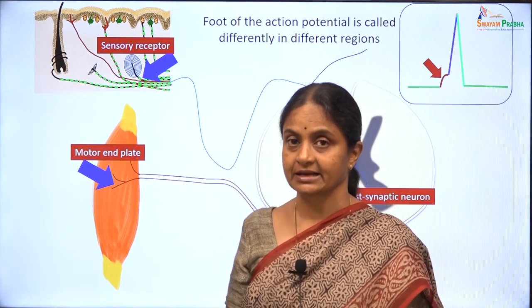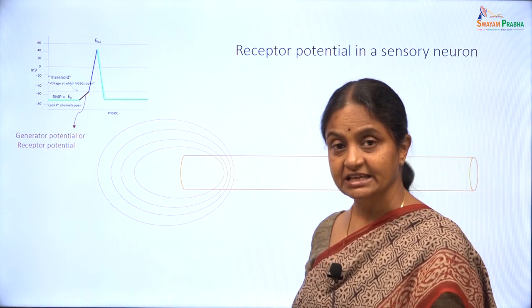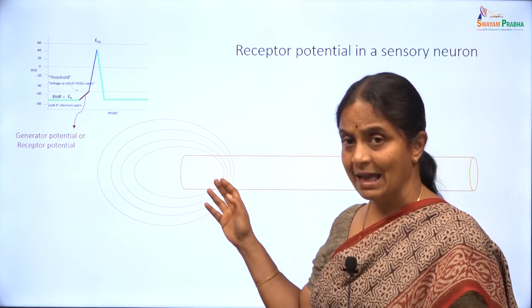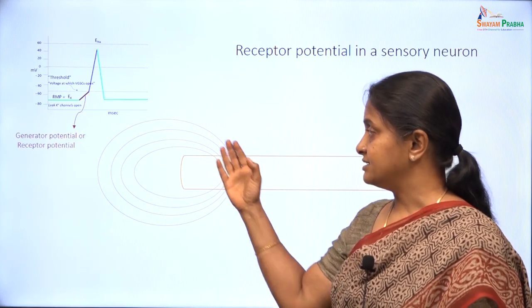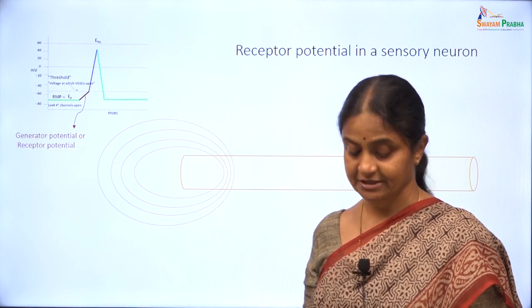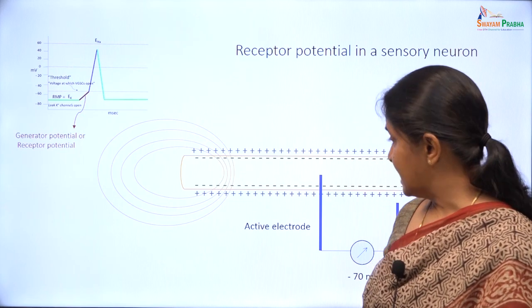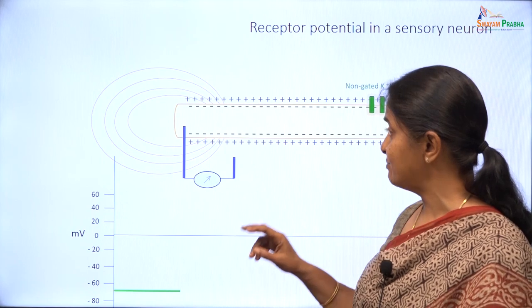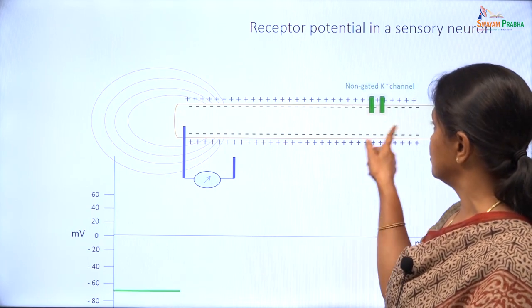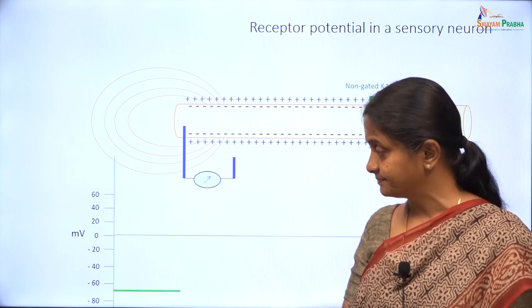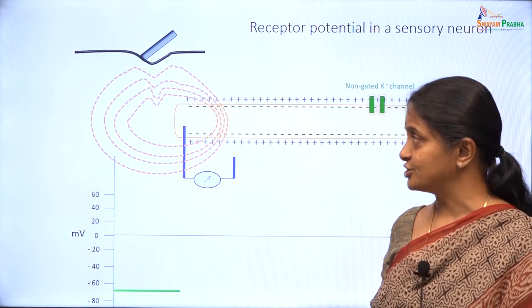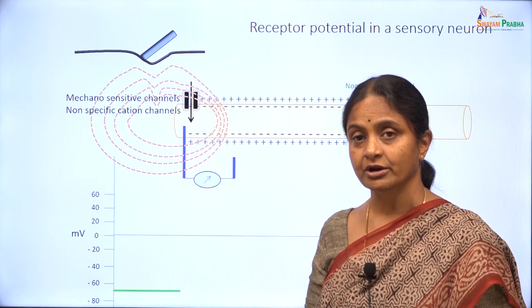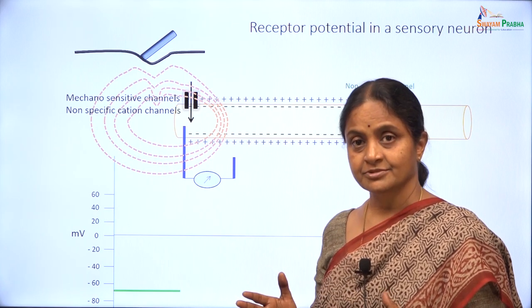This is a cartoon of sensory receptors on the skin. Let this be a Pacinian corpuscle — a sensory receptor. This is the sensory nerve ending and it is overlaid by many lamellae of acellular tissue, and it is these lamellae that give the properties of that particular type of receptor. The receptor is at the resting potential to begin with. If we record potential difference across the membrane, it is going to be in the resting state, due to non-gated potassium channels which are there all over the membrane. Now, when you touch, there is deformation of the lamellae of the Pacinian corpuscle, and that deformation will open mechanosensitive channels on the neuronal membrane — literally, when you are touched, channels open up.